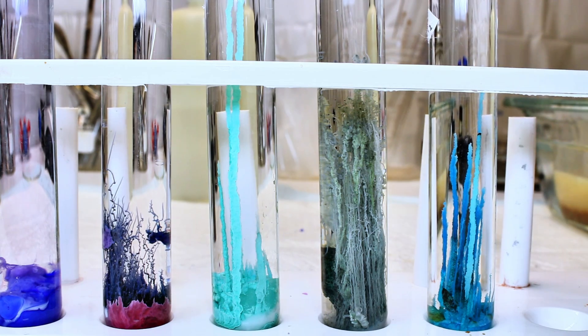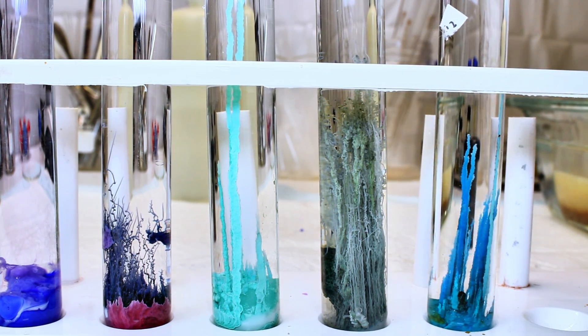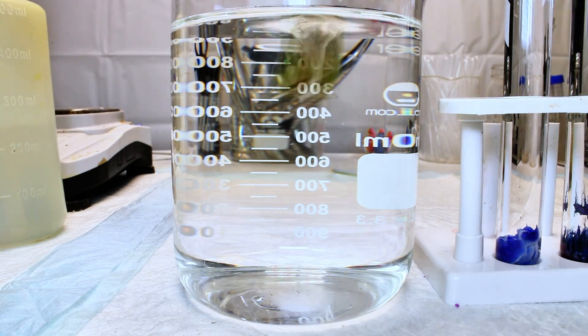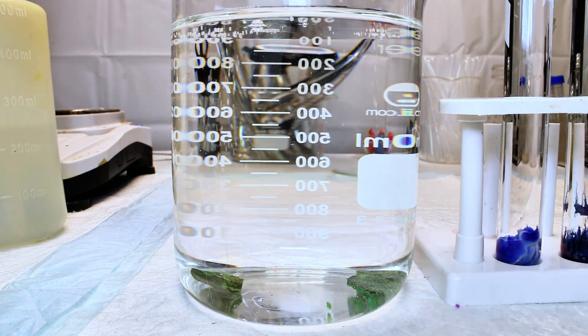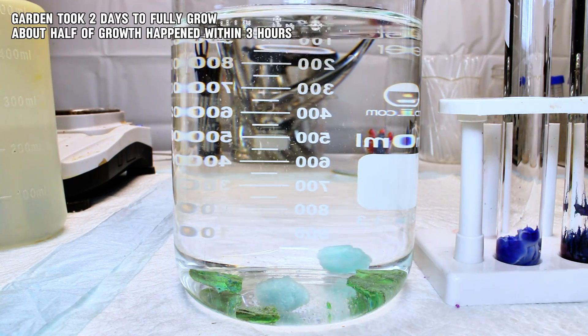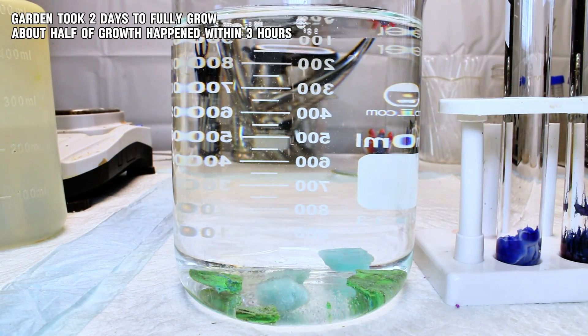At this point, to make my full size garden, all I do now is take crystals of my selected salts and toss them into my 1 liter beaker of dilute sodium silicate and watch them grow. It took about two days for the garden to reach its maximum size, with the rate of growth dropping off exponentially after only about three hours.